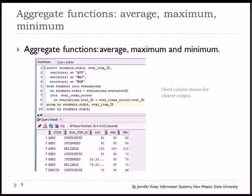I also have the join clause joining students to evaluations and then taking that subset of data and joining it to eval item scores. Notice that the group by clause has both student ID and eval item ID because these are the two fields from the select clause that are not aggregate functions.